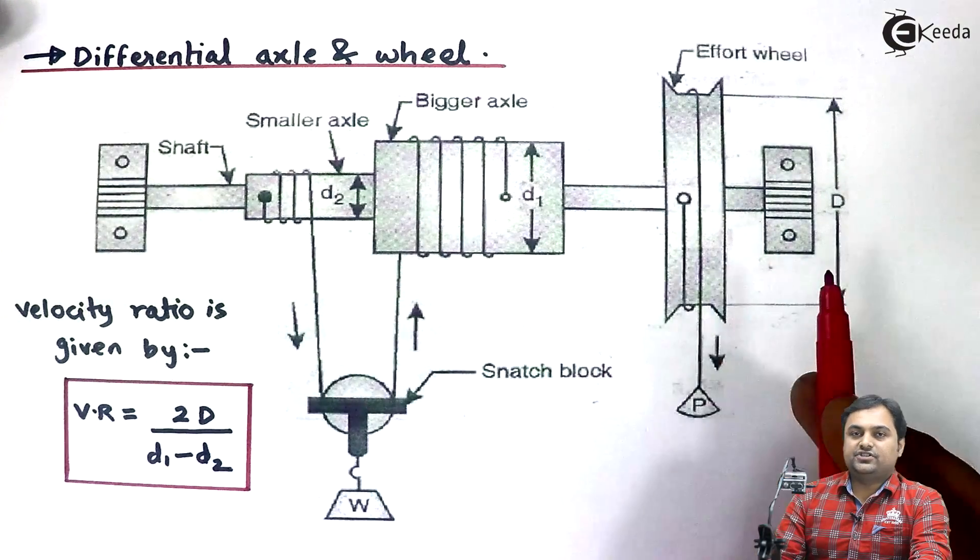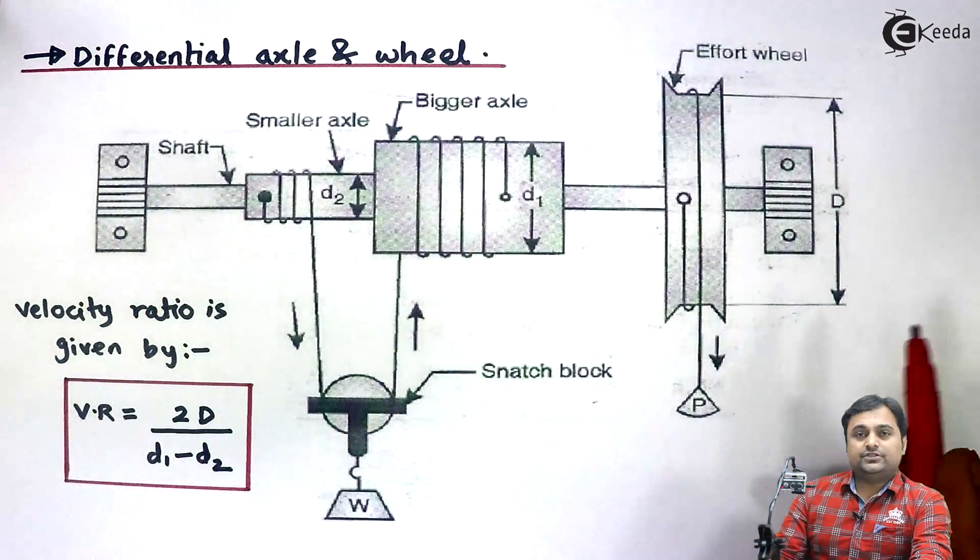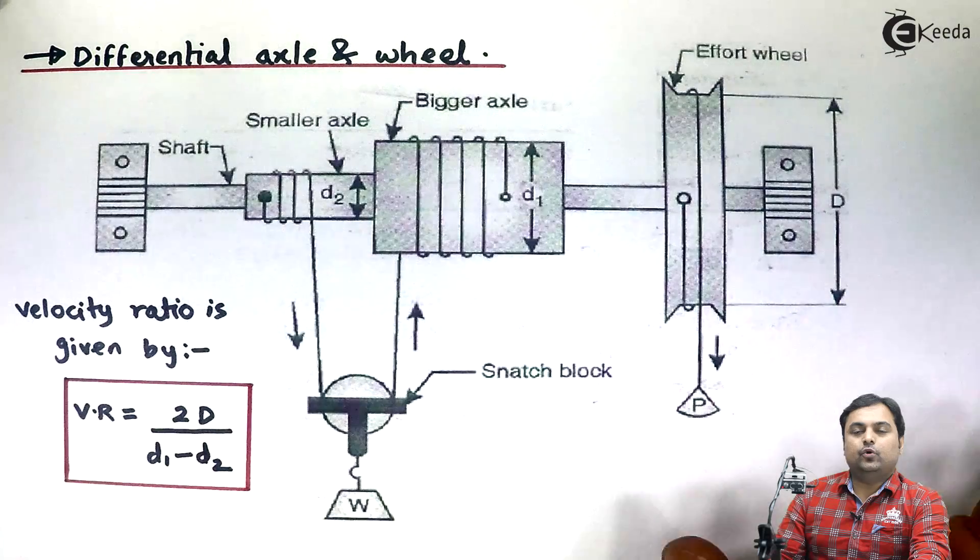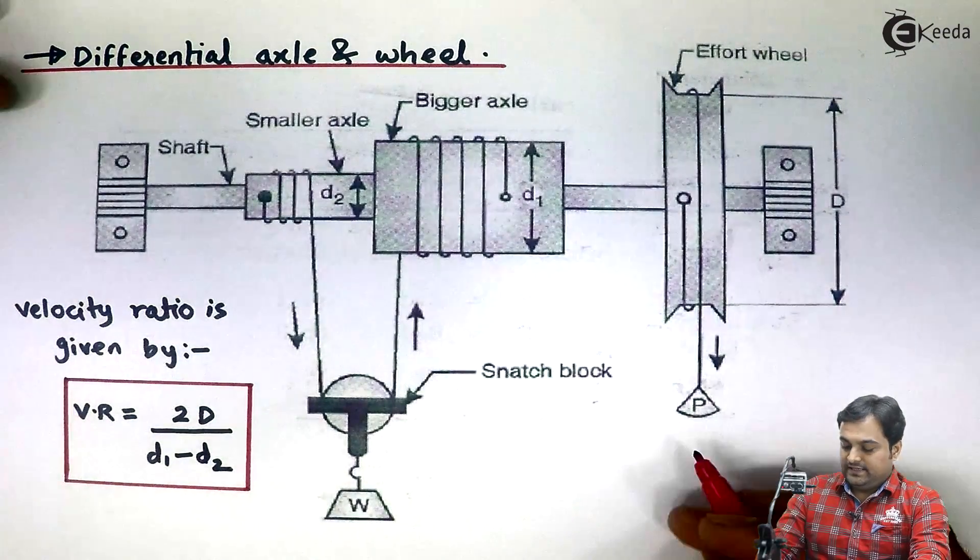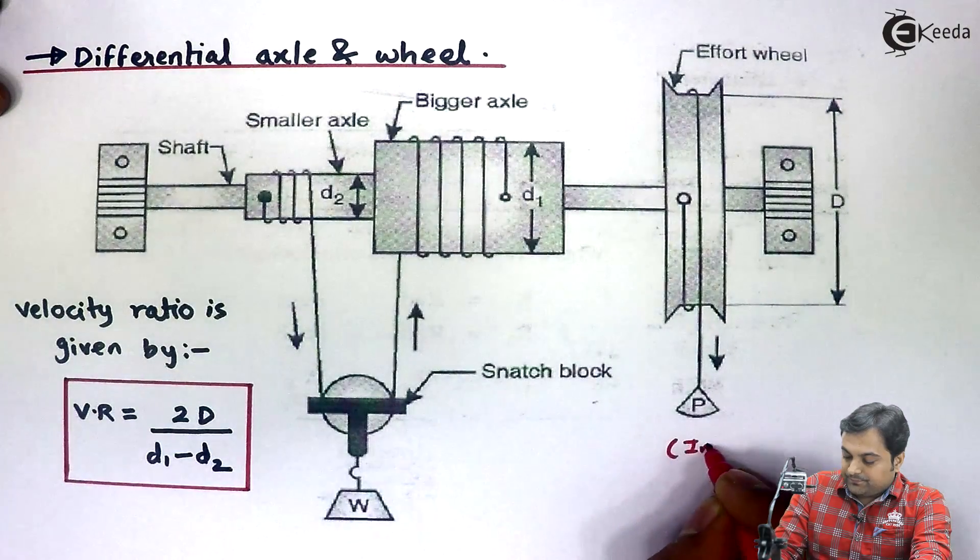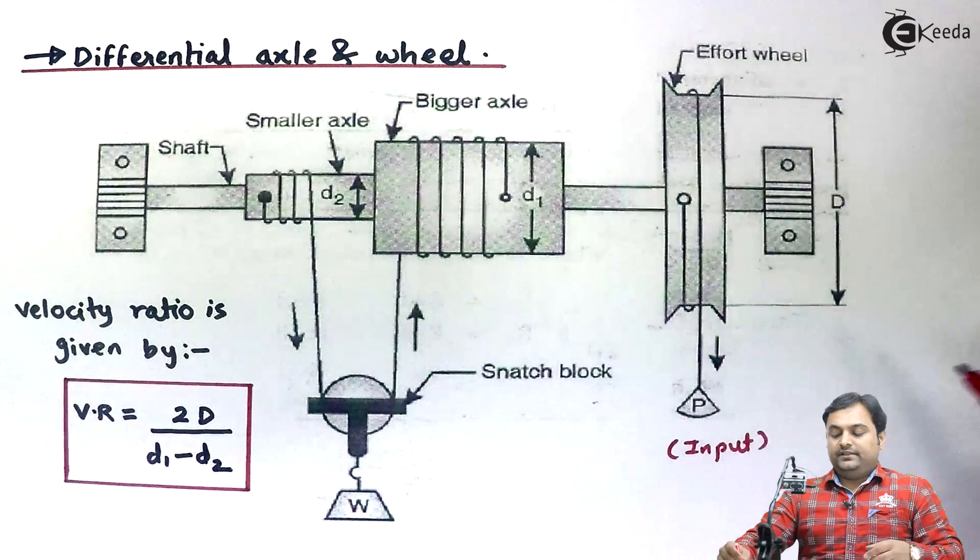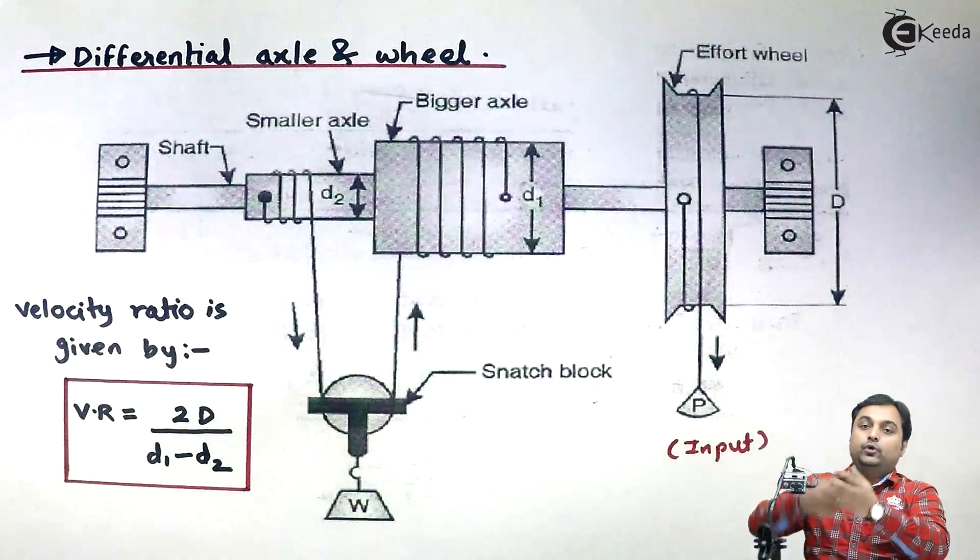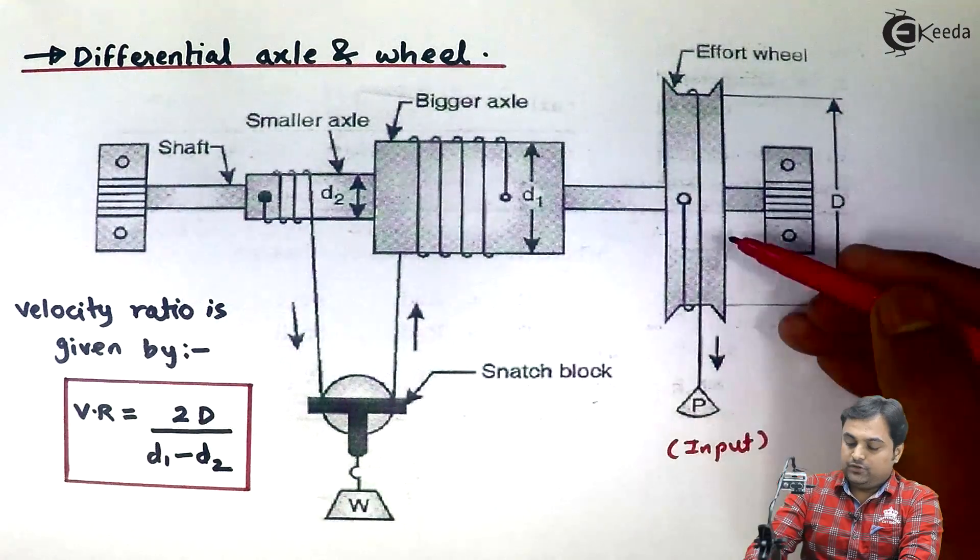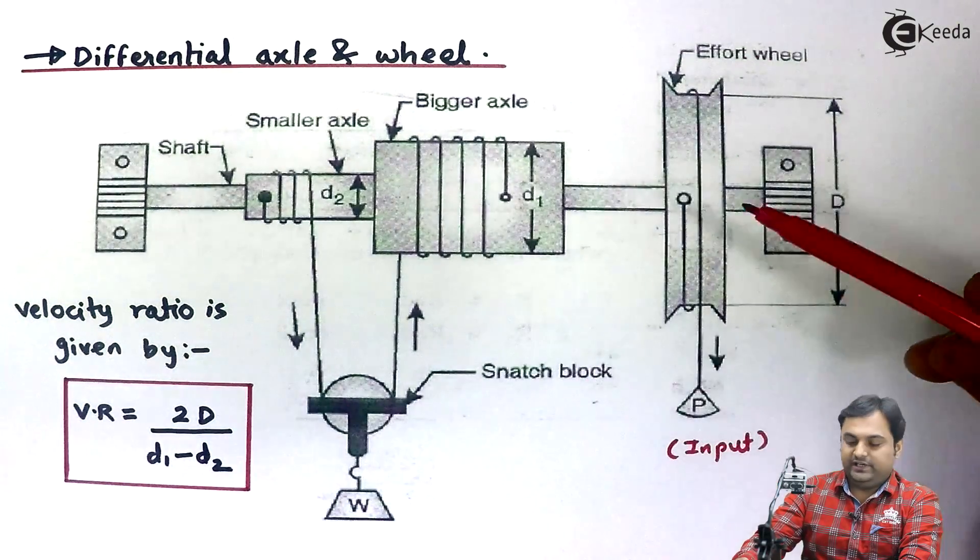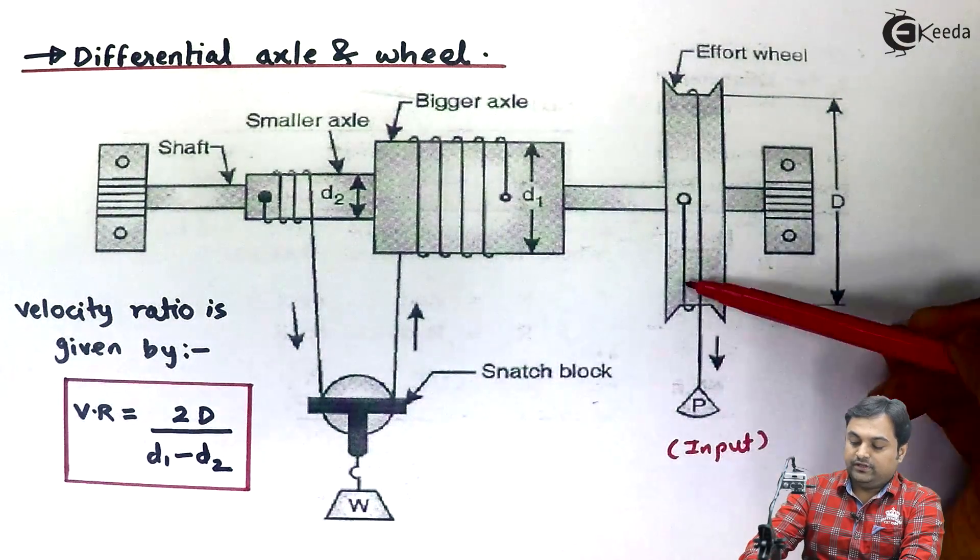Now how it functions? How it works? When we apply effort, this machine will function only if we apply the effort. That is, effort is the input here. When we are applying the effort, either we would be pulling the string at the effort wheel or we will attach some weight here. So this effort wheel will rotate. What will happen is the string when it goes down would be unwound from this effort wheel.